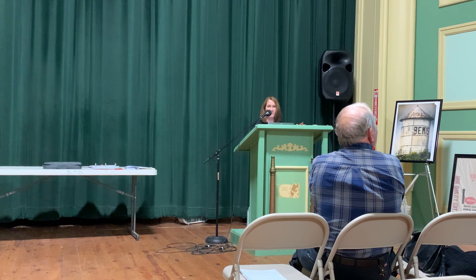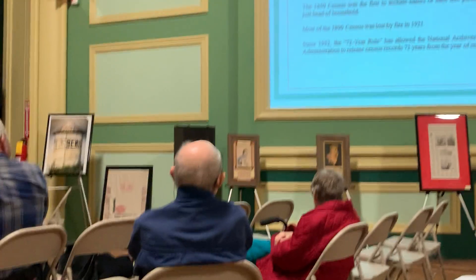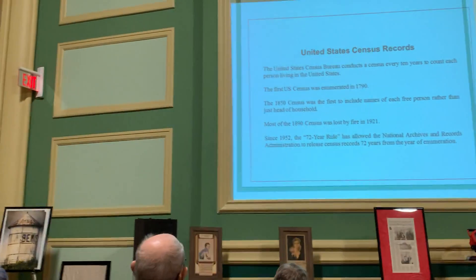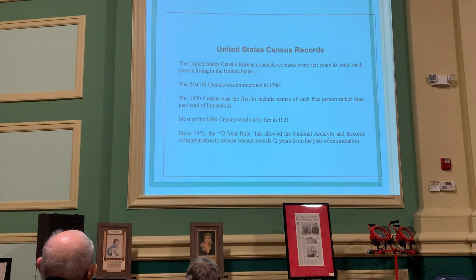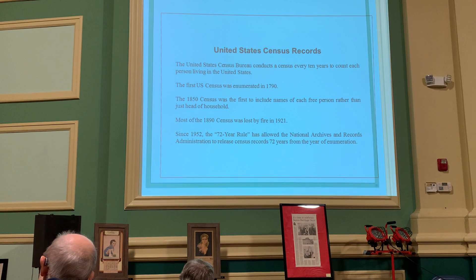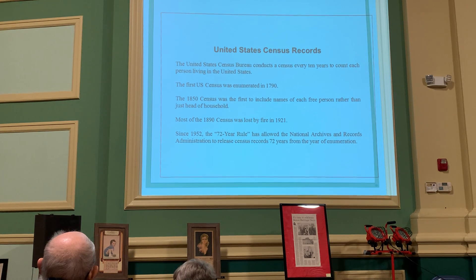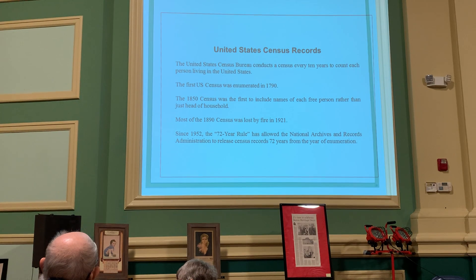The first census in the United States was in 1790. The United States takes a census every 10 years. In 1850 was the first time that everyone in the household — all the free persons — were named, not just the head of household. Most of the 1890 census was lost by fire in 1921. And since 1952, there has been a 72-year rule, which means they will not release a census until it's 72 years old. The life expectancy at that time was 72 years.